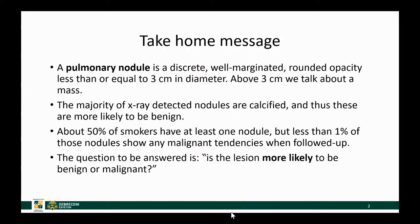By definition, a pulmonary nodule is a discrete, well-marginated, rounded opacity that is less than or equal to 3 cm in diameter. If it's larger than 3 cm, we say that it is a mass. A lot of these x-ray detected nodules are visible because they are calcified and thus are likely to be benign. Nodules are quite common — at least 50% of smokers have one nodule, but in the majority of cases they have much more than one, and even in smokers less than 1% of nodules show any malignant tendencies.